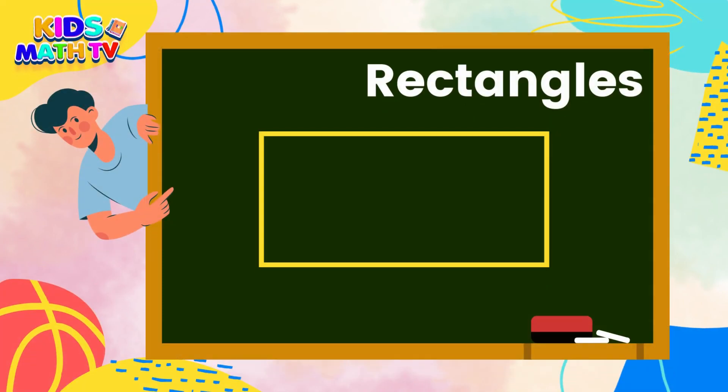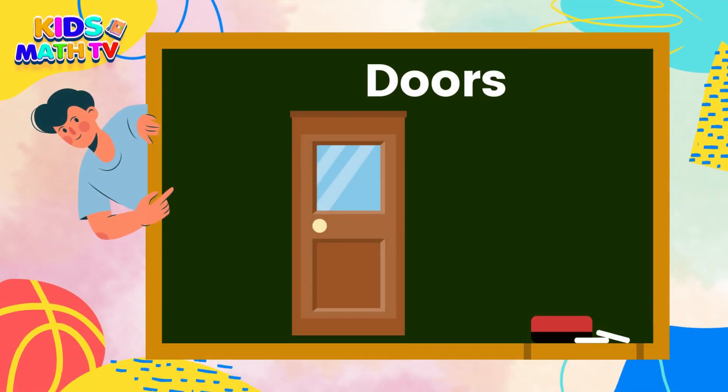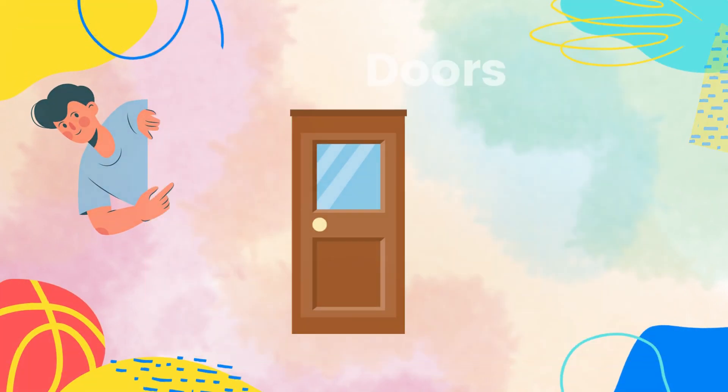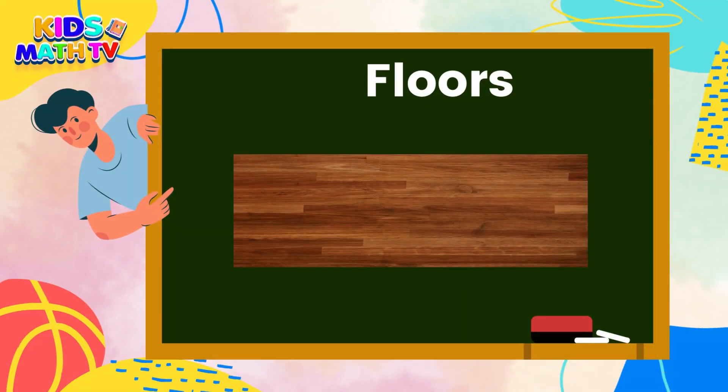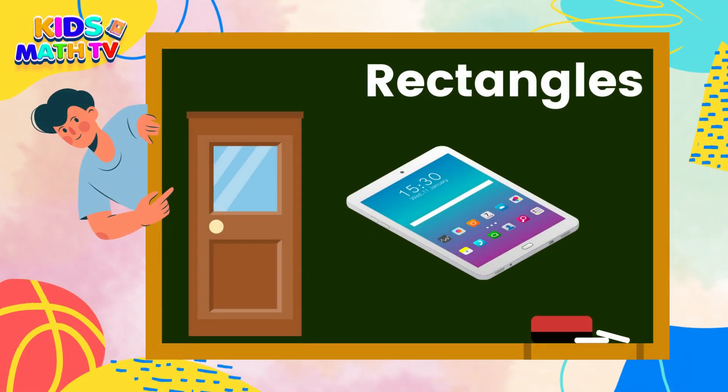Rectangles have four sides and look like a stretched-out square. Some examples of rectangles are doors, windows, tablets, and televisions. Rectangles can be used to create surfaces, like walls or floors, and they can also be used to divide spaces or areas.